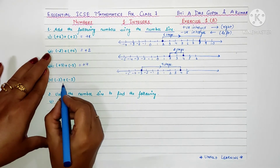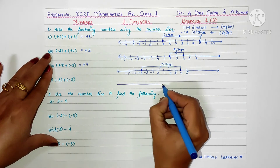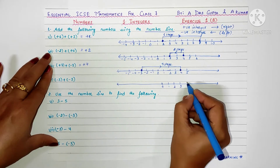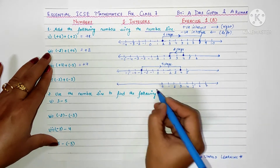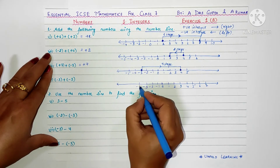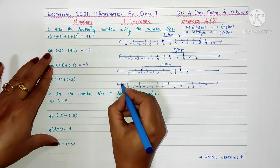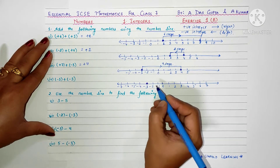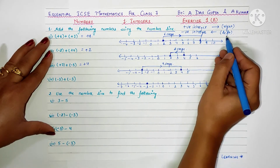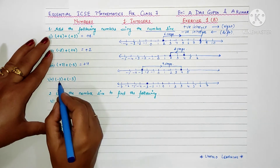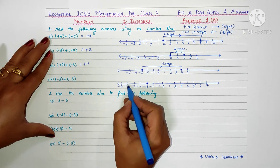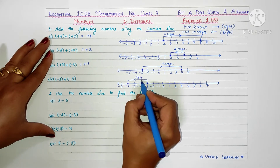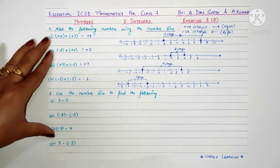Next is minus three plus minus three. We draw a number line and mark zero, one through seven, minus one through minus seven. We start from minus three, then add negative three — negative integer so move left — three steps: one, two, three. So your answer is minus six.